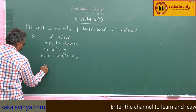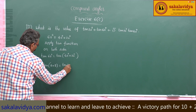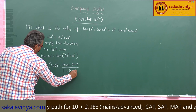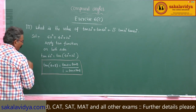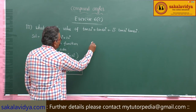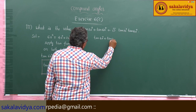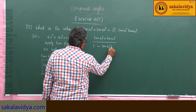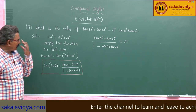The tan of a plus b formula is: tan a plus tan b divided by 1 minus tan a tan b. So tan 60 equals tan 40 plus tan 20 divided by 1 minus tan 40 tan 20. Since tan 60 equals root 3, by cross multiplication we get the expression.